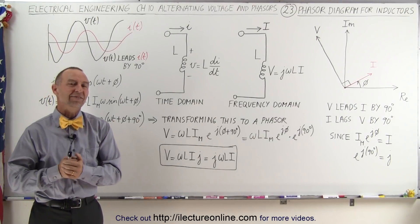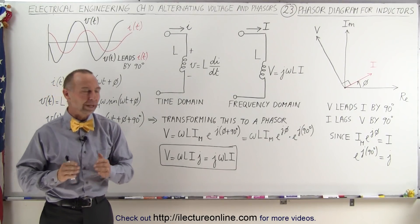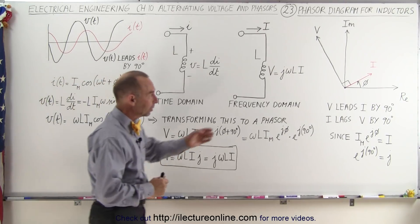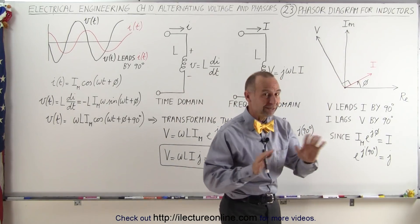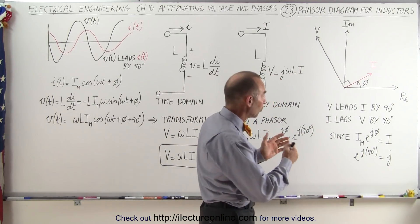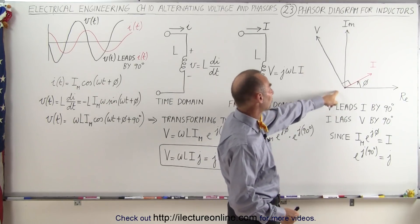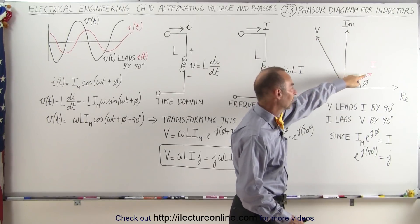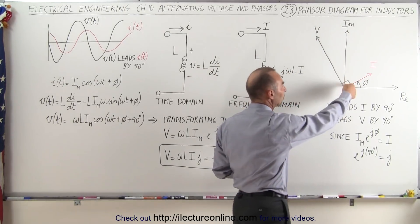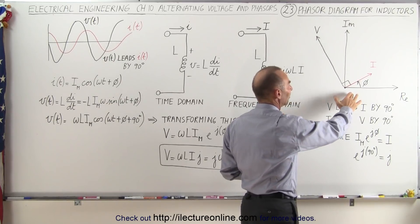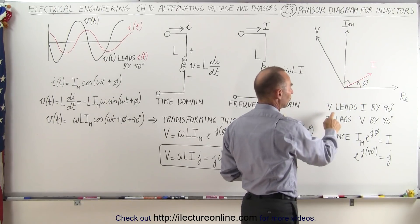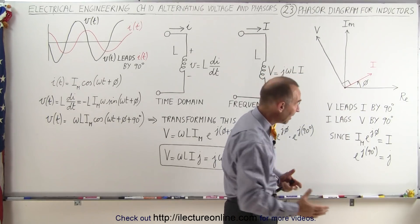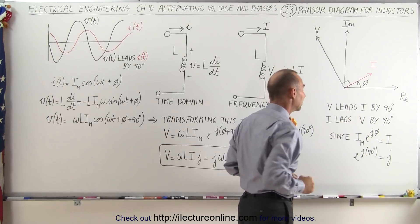Welcome to our lecture online. Now let's take a look at phasors for inductors, or the phasor diagram associated with inductors. If you look at the phasor diagram, you realize that something is different here with inductors relative to resistors. The direction of the arrow representing the voltage across the inductor is different from the direction for the current. There is a 90-degree difference between them, and the voltage is ahead of the current — the voltage leads the current by 90 degrees, or the current lags the voltage by 90 degrees.